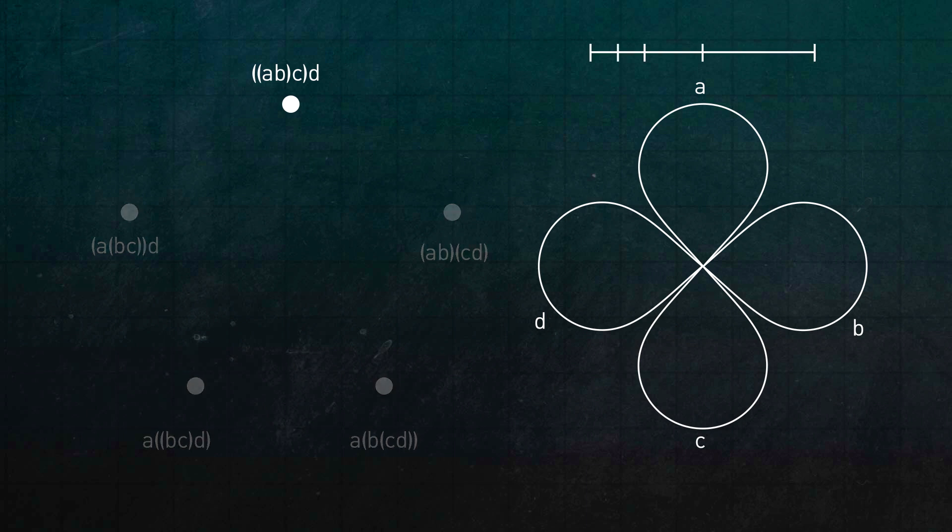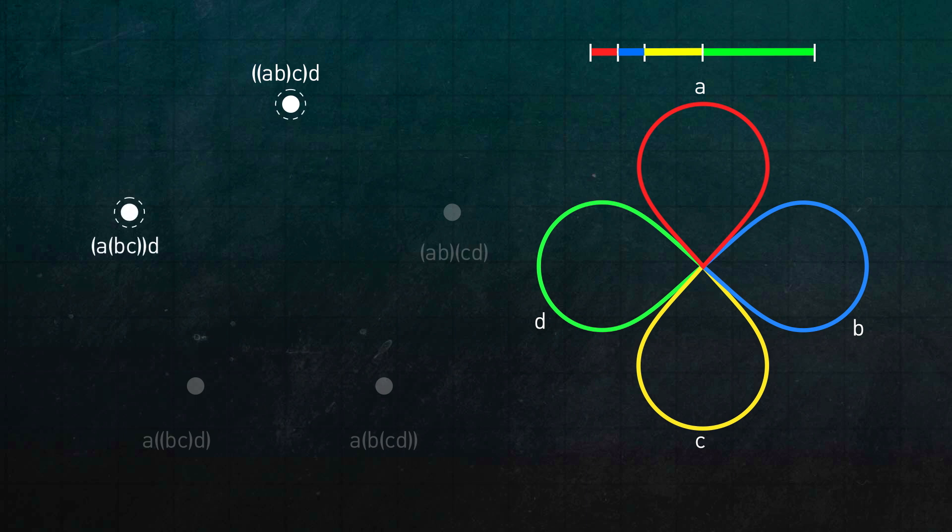For instance, this point corresponds to the loop AB times C times D, where we travel around A and B in the first two eighths of a second, then around C in the next quarter of a second, then around D in the last half second. Moreover, there is a path from here to here. It's given to us by homotopy that's very similar to the one we saw earlier. Just go around A a little slower and C a little faster.